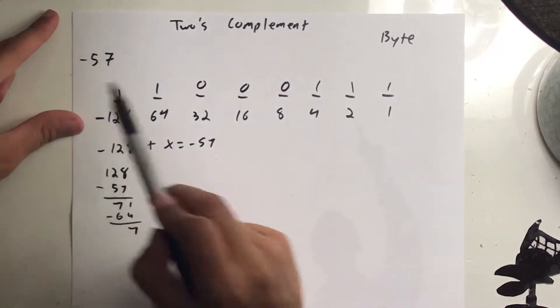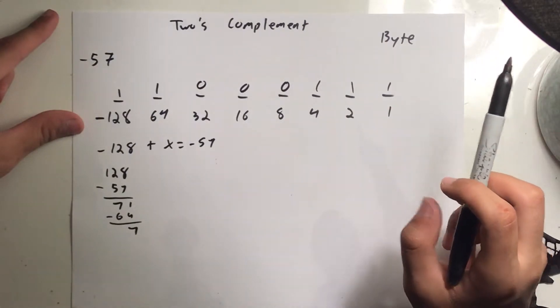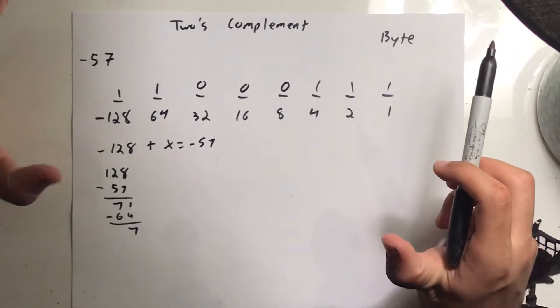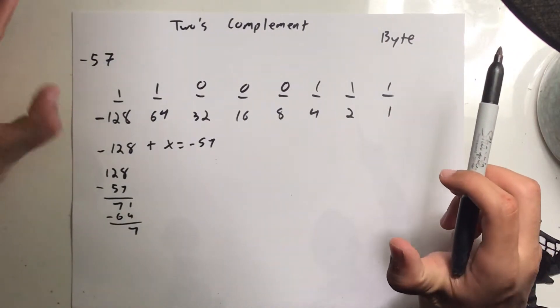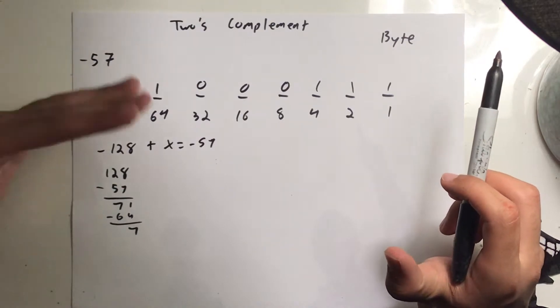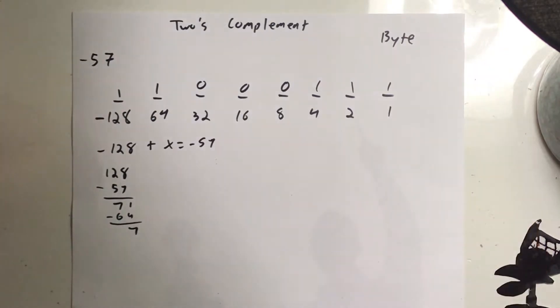When negative 128 plus what number gives me negative 57? A little bit of algebra: negative 128 plus x equals negative 57, so x equals 128 minus 57, which equals 71. So you have to find a combination of these bit values that give you 71. 64 goes into 71; subtract 64 from 71 and you get 7. The combination 4 and 2 give you 6, plus 1 gives you 7. So those bits become ones and the rest become zeros — this is what the computer stores as negative 57.